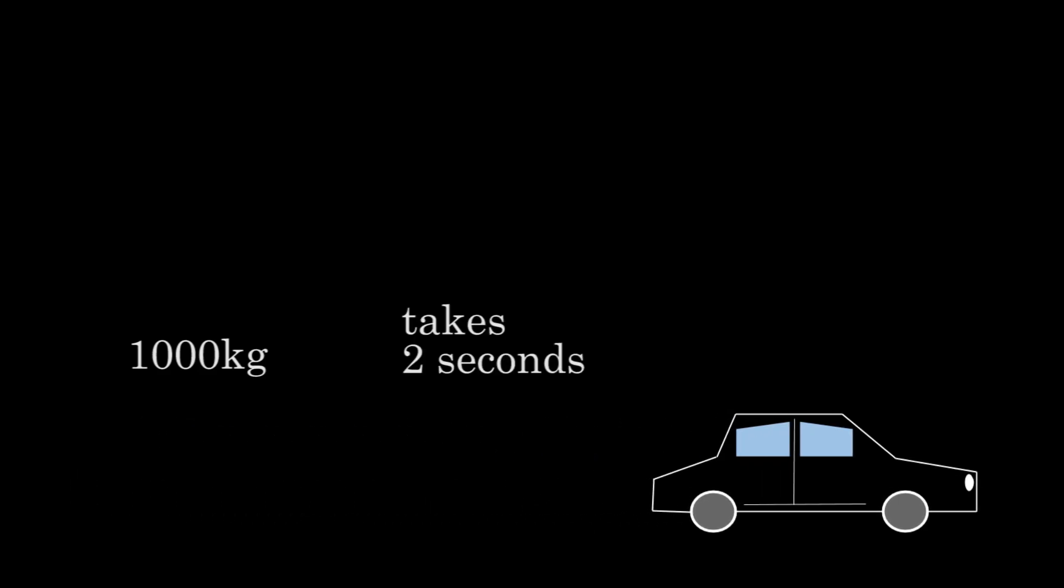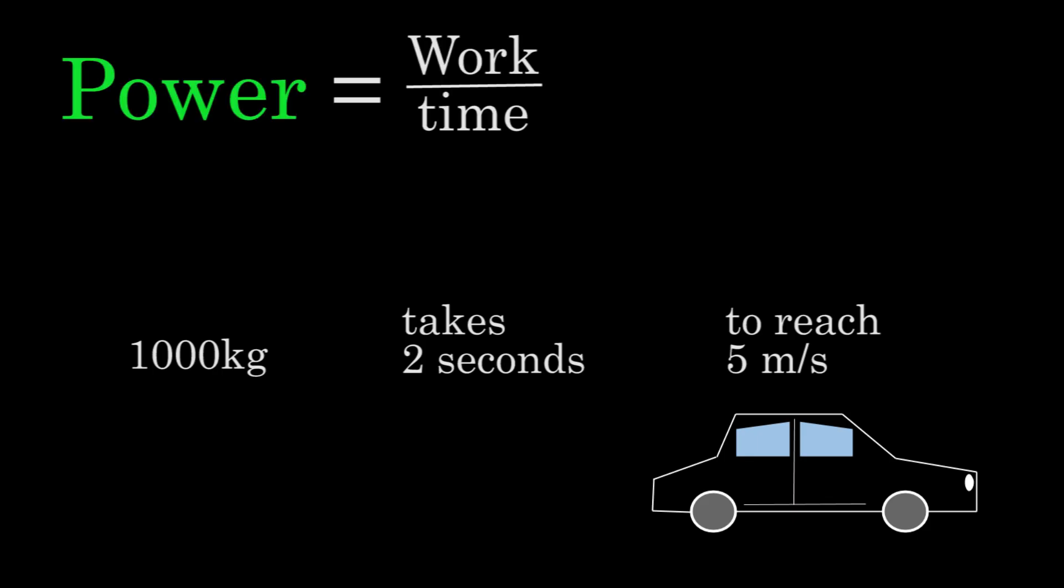Alright, let's look at another example. Let's say a 1,000 kilogram car starts from rest and takes 2 seconds to reach a speed of 5 meters per second. We can find the power output by the engine by taking the work done on the car divided by the time it took to do that work. To find the work done on the car, we just need to figure out how much energy was given to the car.